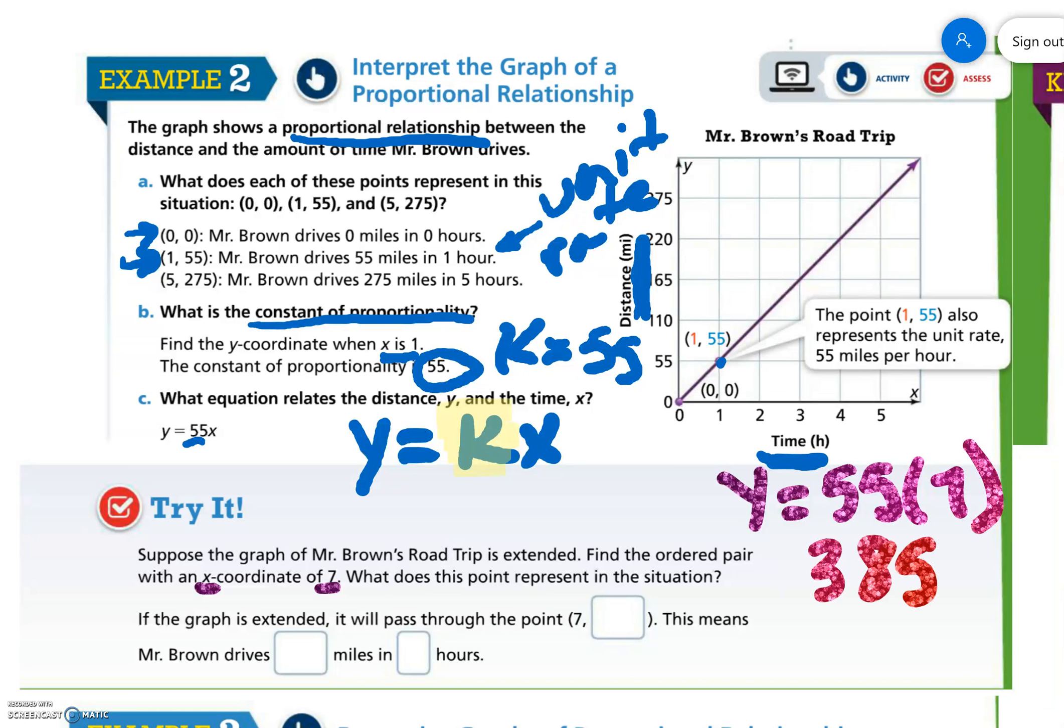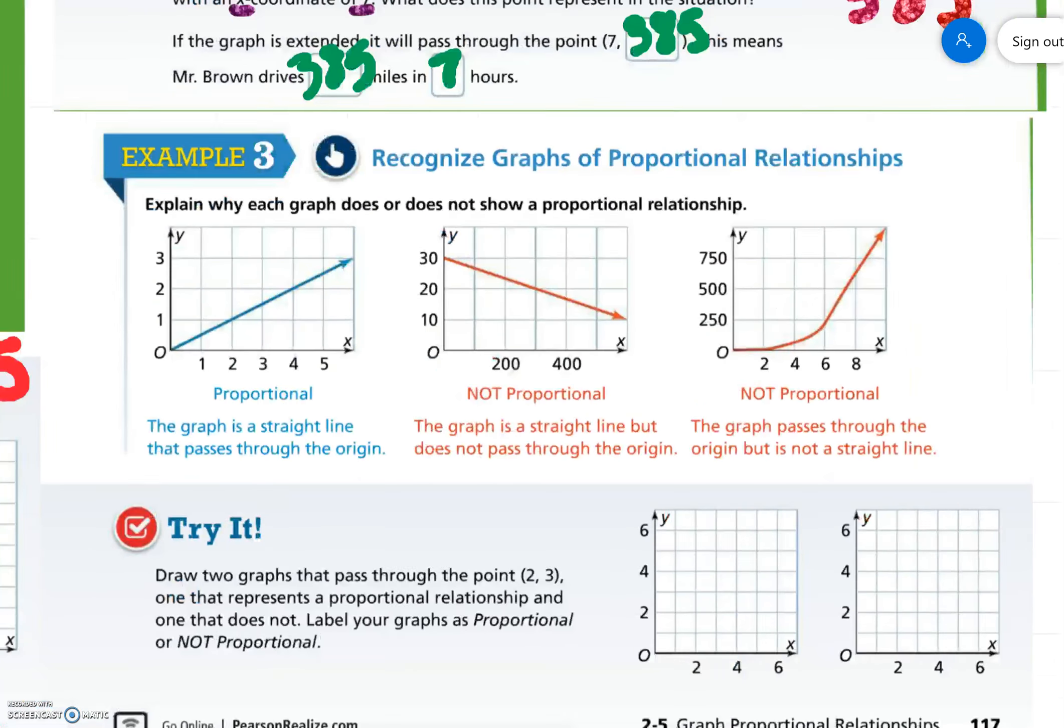So if the graph is extended, it will pass through the point (7,385). This means Mr. Brown drives 385 miles in seven hours. I always want you to be able to interpret the graph. Really read it and not just know the numbers. Know what we're finding.